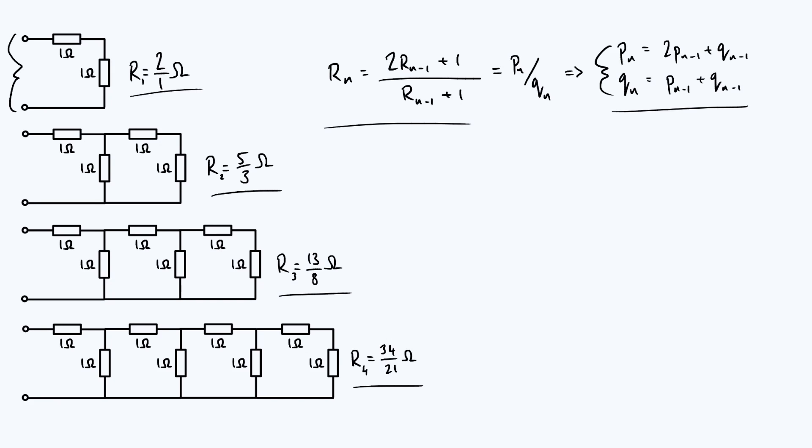And what we did last time is then use linear algebra to solve those coupled linear recurrence relations to find the nth term, Rn as a function of n. This time we're going to take a different point of view and do something which to me is very interesting, but is much less mathematically involved.